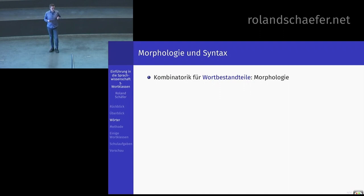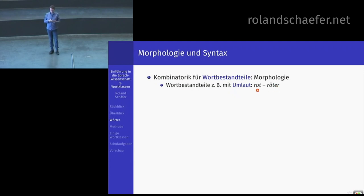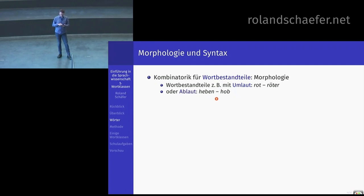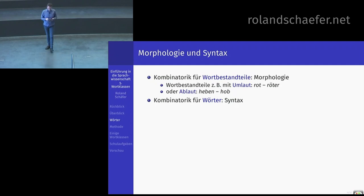Auf welchen Ebenen spielen Wörter eine Rolle? Vor allem Morphologie und Syntax. Die Kombinatorik für Wortbestandteile ist die Morphologie. Staat mit S ergibt Staates. Wenn Sie Komparativ mit Rot kombinieren, kriegen Sie zusätzlich Umlaut – das müssen Sie in der Morphologie beschreiben. Oder Ablaut: Heben können Sie heben, Sie können Heb mit N kombinieren, aber hob ist ein anderer Stamm, Sie können nicht hoben sagen. Wenn die Wörter fertig gebildet sind, haben Sie die Syntax. Beides beschäftigt sich mit Wörtern.